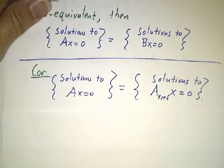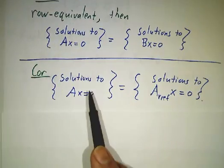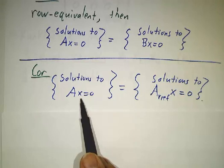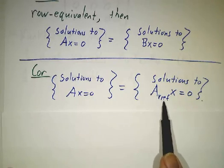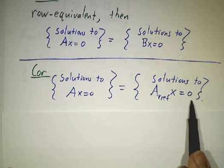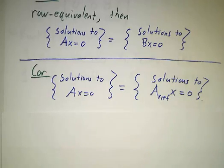And in particular, it means that if you have any old matrix and you want to figure out the solutions to Ax equals 0, well, you can do your row operations to convert A to the reduced row echelon form, and the solutions to Arref x equals 0 are the same as the solutions to Ax equals 0.